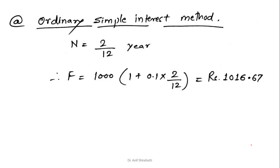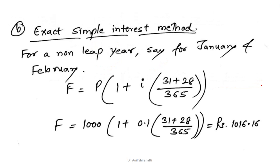Using the ordinary method, what is N? N is the period — 2 months. Dividing the complete year into 12 equal months, N becomes 2/12. Substituting i = 0.1 and P = 1000, I got the amount as Rs. 1016.67 using the ordinary simple interest method.